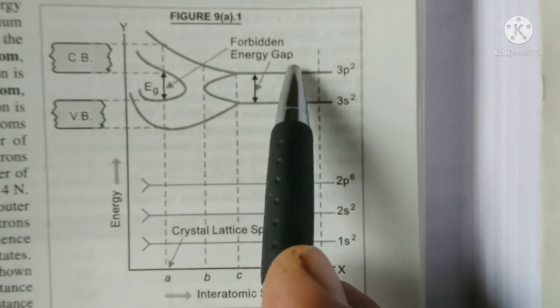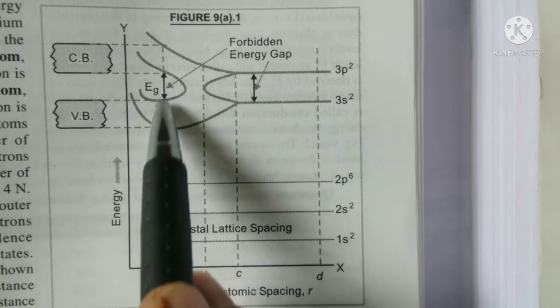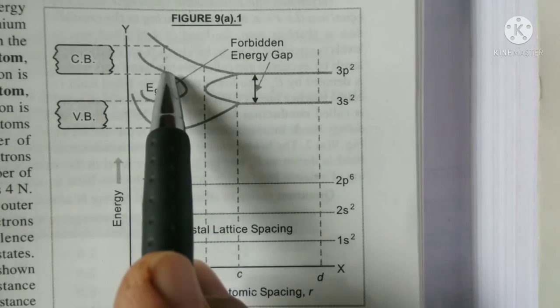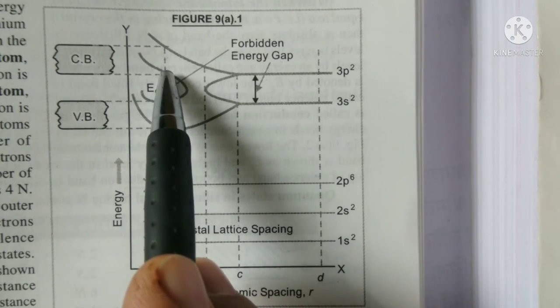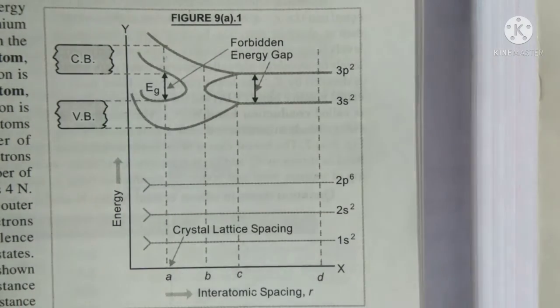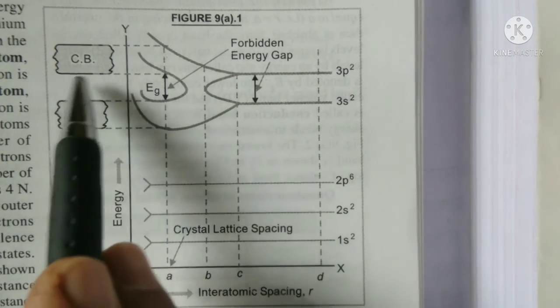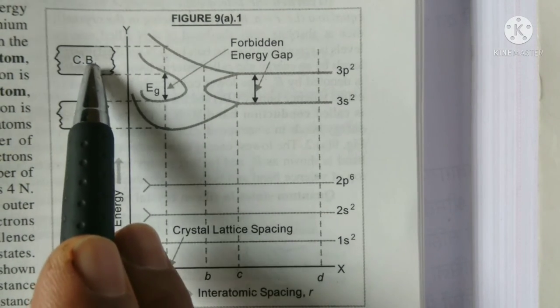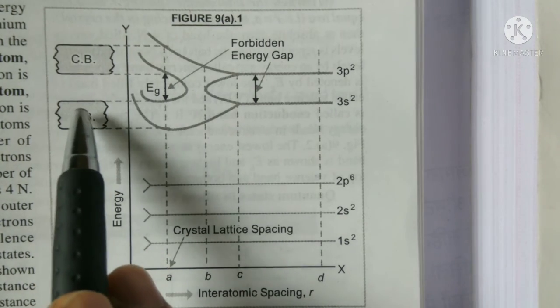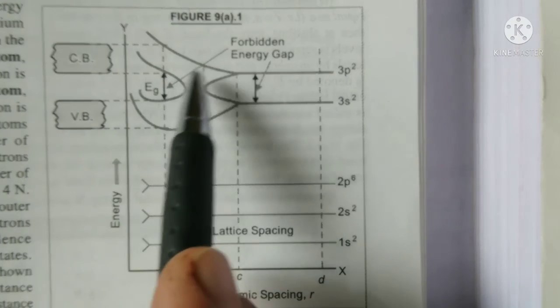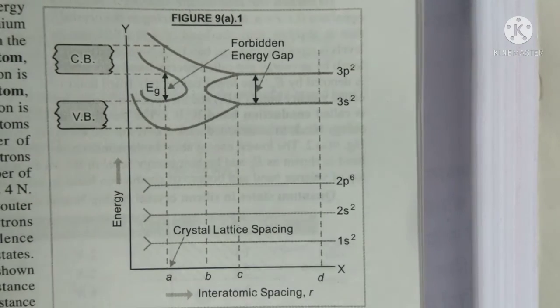Which is called the forbidden energy gap. The lower filled levels are called valence band and the upper unfilled energy levels are known as conduction band. And the gap between them, the difference between lower of the conduction band and top most of the valence band, that difference is called forbidden energy gap.